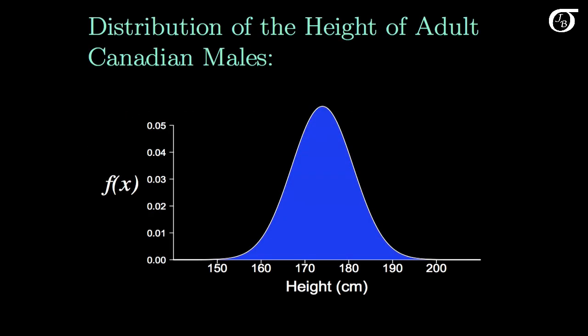Here I've plotted out what is approximately the distribution of the height of adult Canadian males. And this what we see here is a normal distribution. This is our variable down here, and f is what we call the probability density function, which gives the height of the curve at point x.